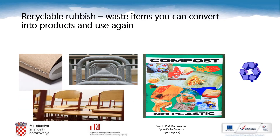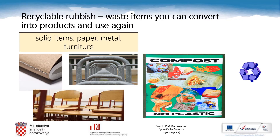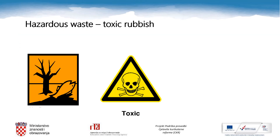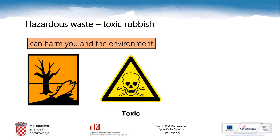What about recyclable waste — items you can convert into products and use again? What can we recycle? Well, solid items like paper, metal or furniture, and organic waste. Good job! And why is hazardous waste or toxic rubbish dangerous? Because it can harm you and the environment. Well done!